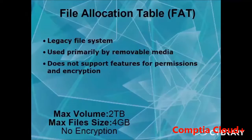FAT stands for File Allocation Table. It is a legacy file system used in most thumb drives — anything less than 32 gigs — and is primarily for removable media. FAT does not support encryption or permissions. A lot of companies will not allow thumb drives inside the building because if you take a file from NTFS and transfer it to a FAT-formatted thumb drive, it will lose all of its permissions and encryption — you'll be able to access it as if there were no permissions in the first place.